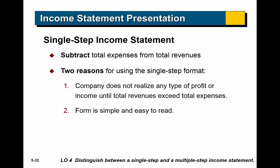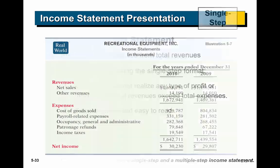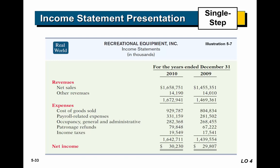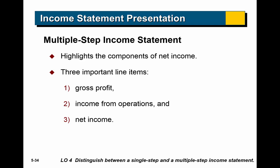Let's look at the income statement. To this point we've used a single-step income statement: it has revenue, has expenses, you subtract expenses from revenue, and get net income. It's great because it's simple and clearly shows how the company is doing. But often businesses use a multi-step income statement, which has a few more important items.